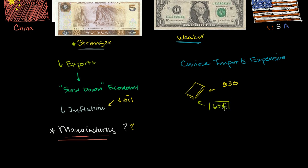So this $0.60, which was how much it cost to make this in China, if this now goes up to $0.80 or if this goes up to $1, it's not clear that this price even has to change. Or even if it were to change from $30 to $31, it's not clear that that would affect demand much.